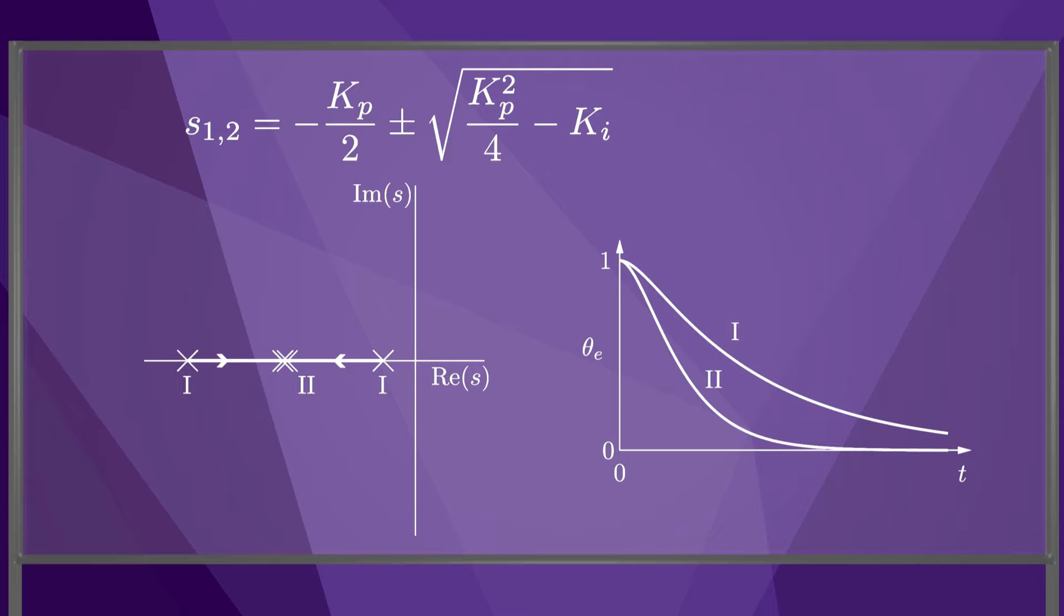If we continue to increase the gain Ki, the term in the square root becomes negative, and the two roots become complex conjugates, moving away from each other in the vertical direction. The new roots and the new response are marked three.